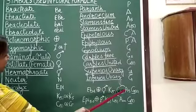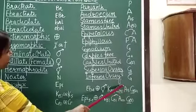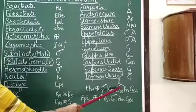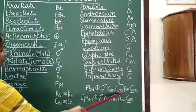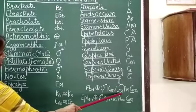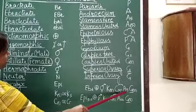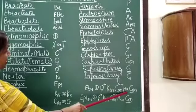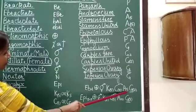This C and A means corolla and androecium are united, so this is epipetalous condition. Number of petals is 5, which are fused together. Androecium also has 5 stamens, but they are free because they are not enclosed within brackets.